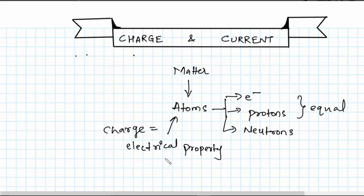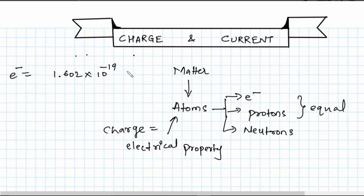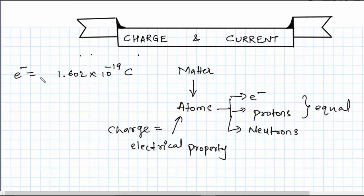Charge is the electrical property of atoms, so each and every atom in this world will have some amount of charge. The charge on an electron is equal to 1.602 × 10⁻¹⁹ coulombs. By convention, we take the sign of this value to be negative.